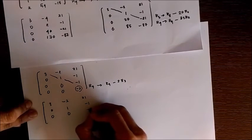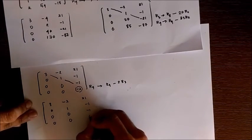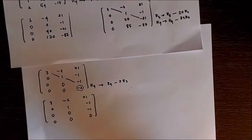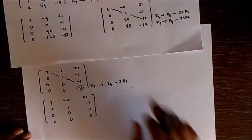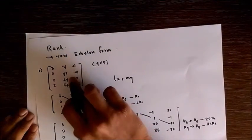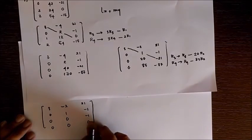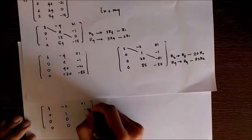As you can see, this is the row echelon form of the given matrix. We have simplified this matrix into such a form, and in this we have three rows with non-zero elements.